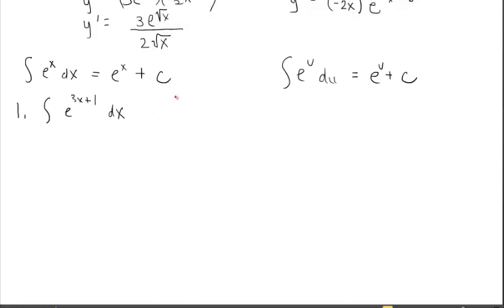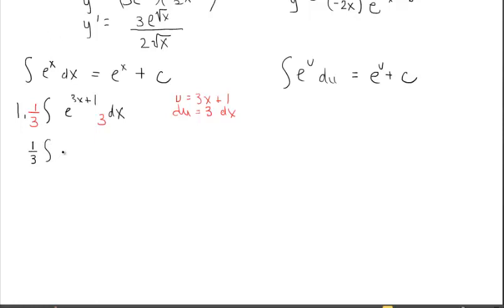Let u be the exponent, so u equals 3x plus 1. Then du is 3 dx. I have dx but not the 3, but that's not a problem we've seen with u-substitution — I can bring in the constant multiplier and counter it with one-third. Rewriting, I can make the whole integrand look like e to the u times du.